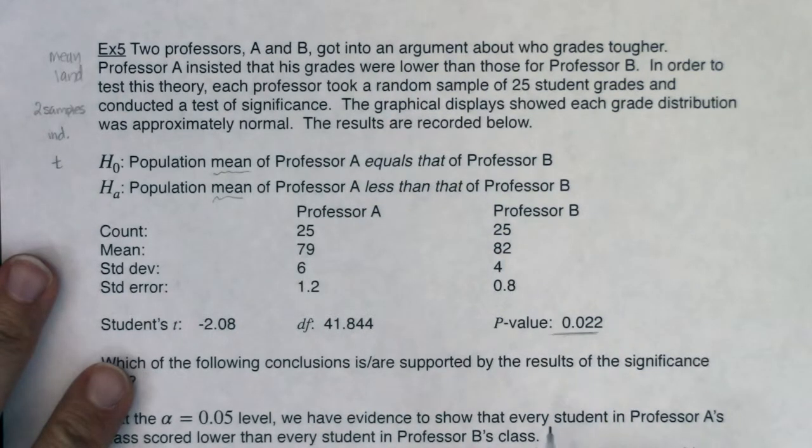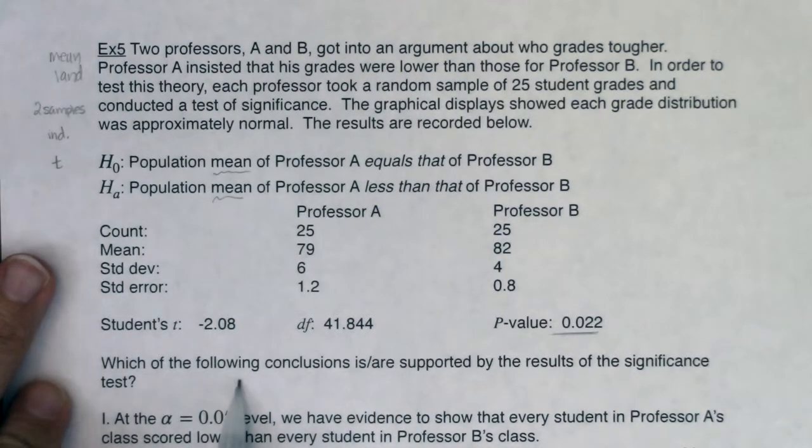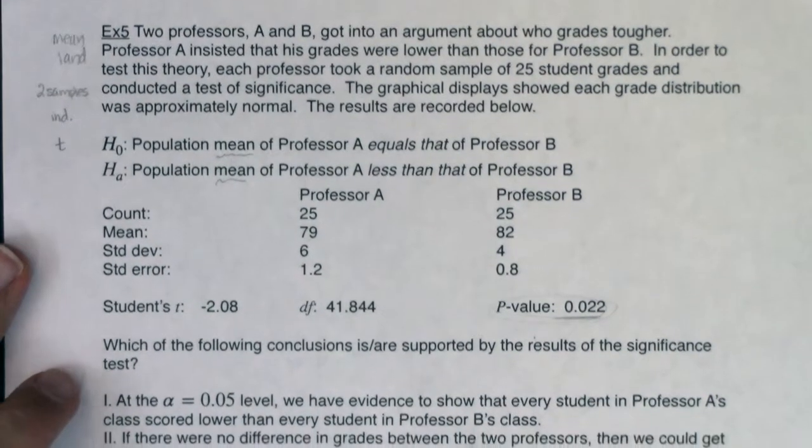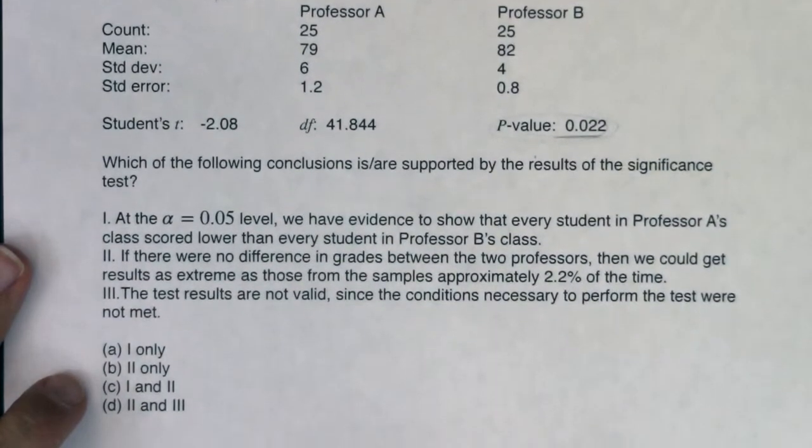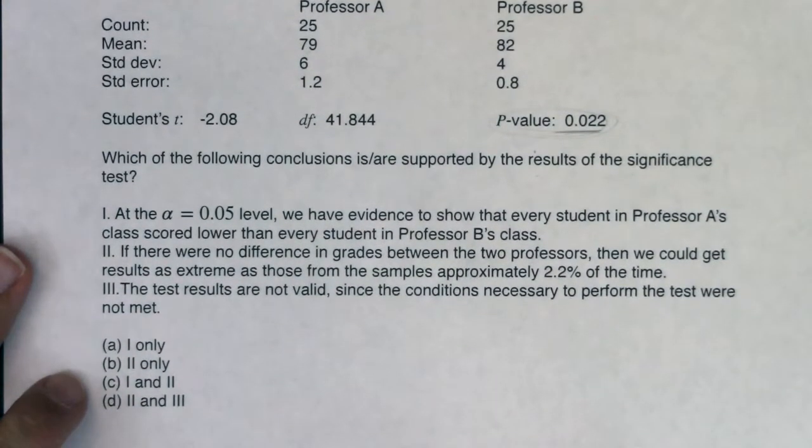And oh there's the big one. There's a p-value. All right so it says which of the following conclusions is or potentially are supported by the results of the significance test? All right so I'm going to keep in mind the p-value I know is going to be a big one. I'll keep that in mind. All right and then let's see if we can figure out which of these sentences are true.